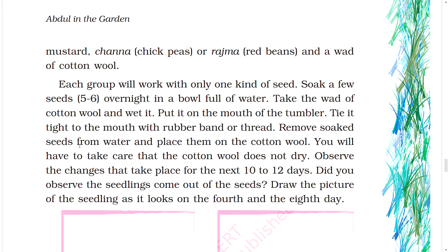Soak a few seeds — five to six — overnight in a bowl full of water. Take the wad of cotton wool and wet it. Put it on the mouth of the tumbler. Tie it tight to the mouth with a rubber band or thread. Remove the soaked seeds from water and place them on the cotton wool. Take care that the cotton wool does not dry. Observe the changes for the next ten to twelve days.